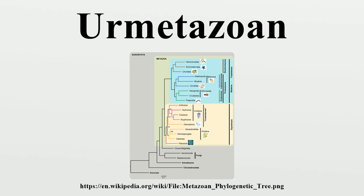The Urmetazoan is the hypothetical last common ancestor of all animals. It was undoubtedly marine, but beyond this its form is difficult to determine. Five different hypotheses have been put forward, and discriminating between them is difficult because the relationships of animal phyla are not completely resolved.